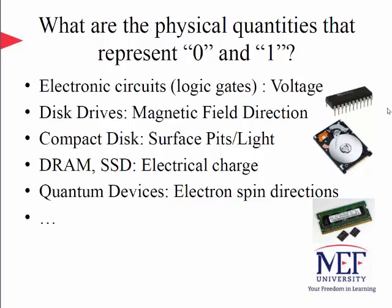So what are the physical quantities that represent the logical zero and one? In electronic circuits, it might be voltage or current. The magnetic field's direction could represent zero and one on the surface of disk drives. Compact disks use surface pits and light to represent zero and one. Dynamic RAM or solid-state devices use electric charges to represent zero and one. And quantum devices use electron spin directions to represent zero and one.